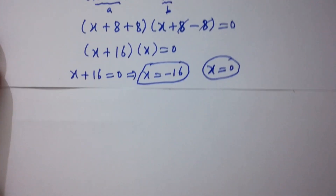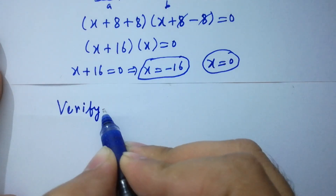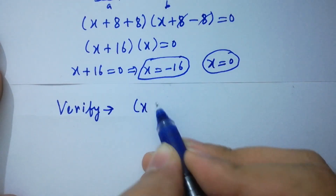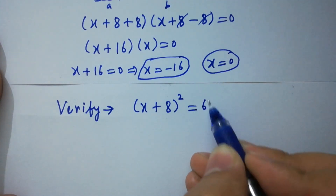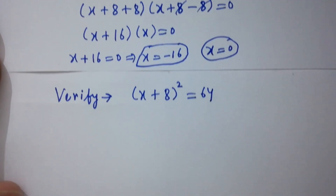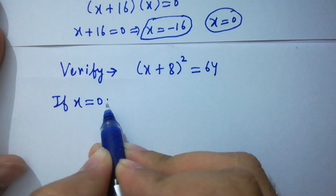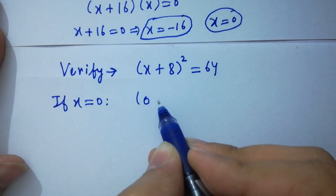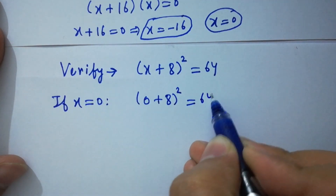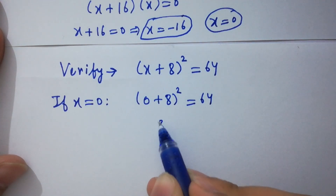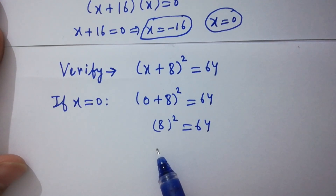I am going to verify. For (x + 8)² = 64, if x = 0, then (0 + 8)² = 64. That gives 8² = 64, and 8 × 8 = 64. Left-hand side equals right-hand side.